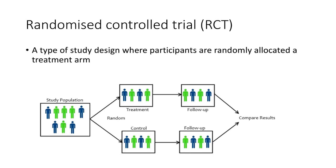The study we looked at here was a randomized controlled trial. This is a common study type where participants are randomly allocated to a treatment arm, followed up, and results compared. There are various ways and means to randomize a population, which we'll discuss in a further lecture.